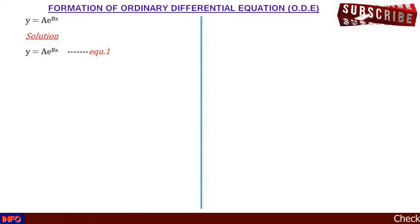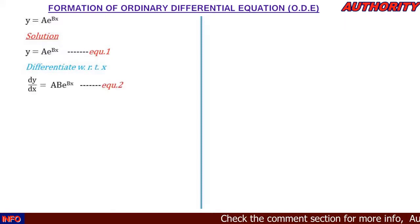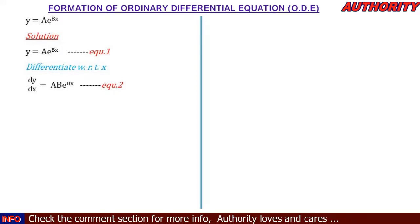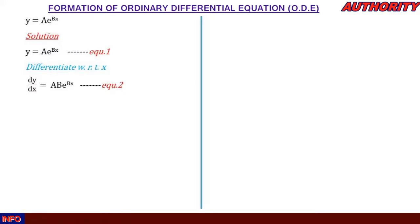The first thing we're going to do is differentiate this function. When we differentiate y we get dy/dx, and differentiating ae^(bx) brings b down, giving us dy/dx = abe^(bx). This is the first derivative — let's call this equation two.